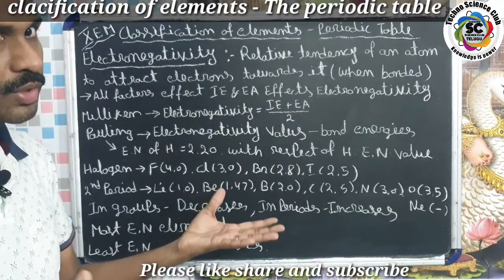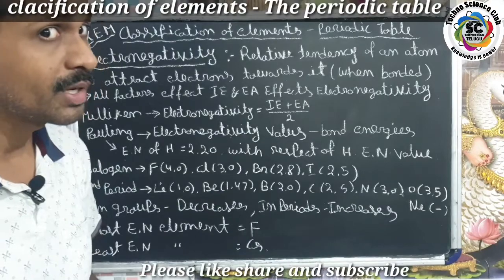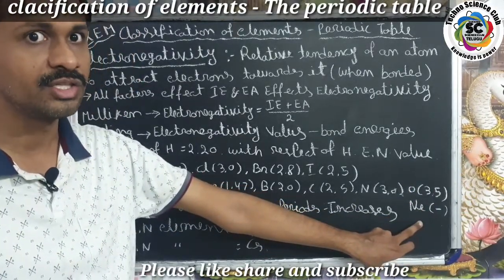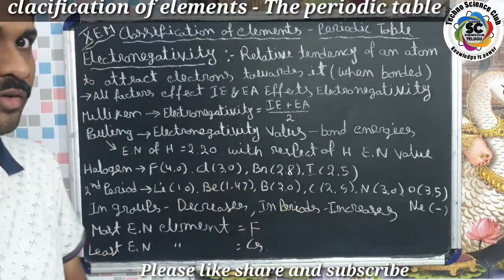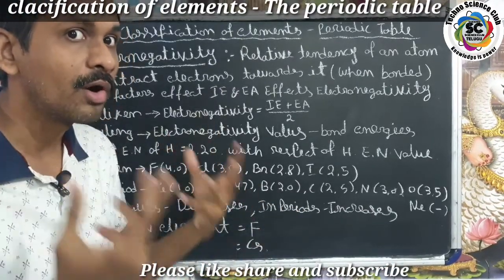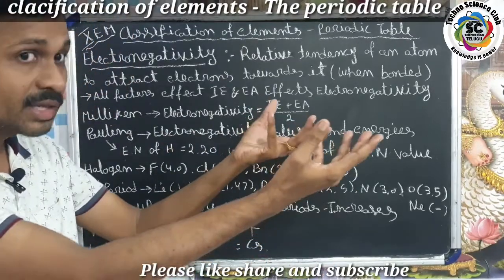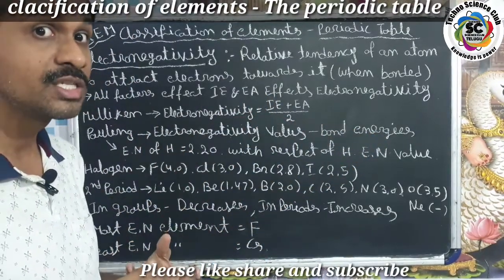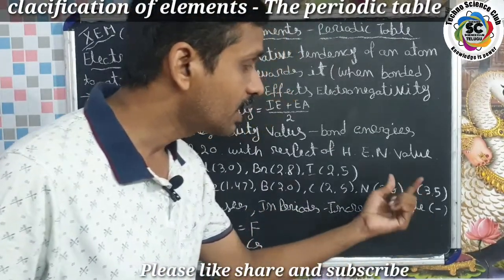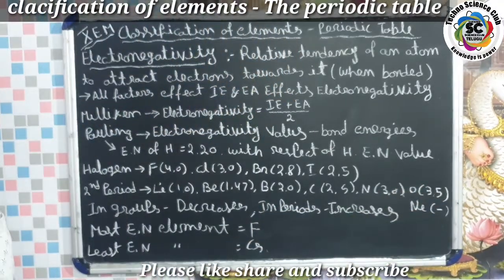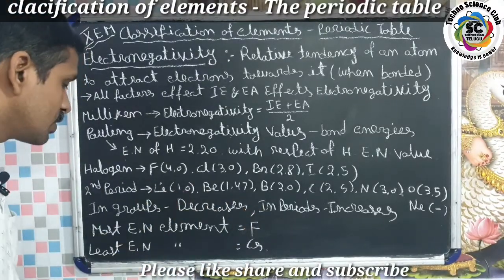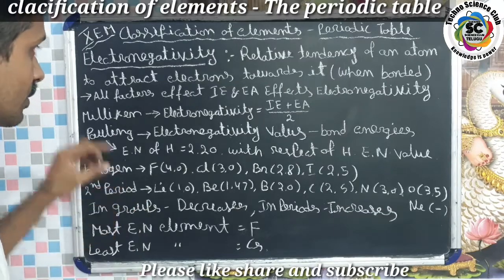Neon does not have an electronegativity value. Yes, neon is a noble gas — it is stable and does not form any bonds. Because it does not participate in any bonding, it does not attract an electron pair and has no tendency to do so. Therefore neon has no electronegativity value because it is a noble gas and does not participate in any bonding.